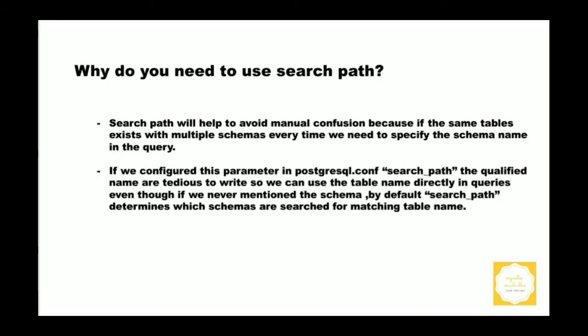Why do you need to use search path? The search path will help to avoid manual confusion because if the same table exists in multiple schemas, every time we need to specify the schema name in the query or the connection string. If we configure the search_path parameter in the Postgres configuration file, the qualified names are tedious to write, so we can use the table name directly in queries. Even if we never mention the schema name, by default the search path determines which schemas are searched for the matching table name.